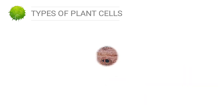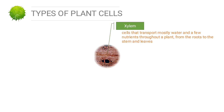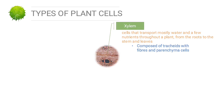The next type of plant cell is xylem. Xylem cells transport mostly water and a few nutrients throughout the plant, thus transporting substances from the roots to the stem and leaves. Xylem is composed of water-conducting tracheary elements together with fibers and parenchyme cells.